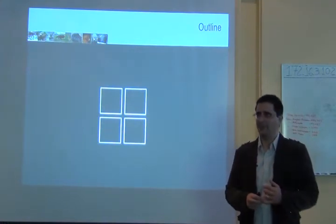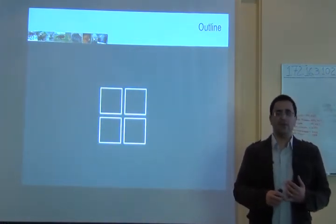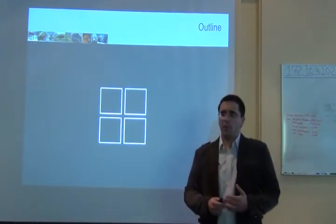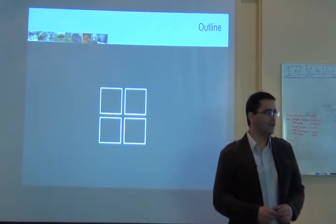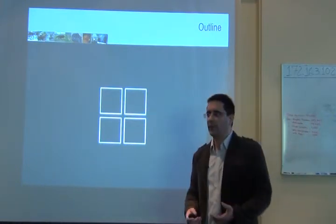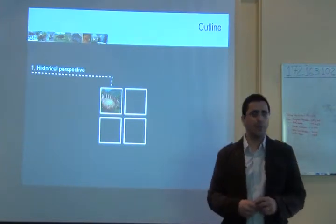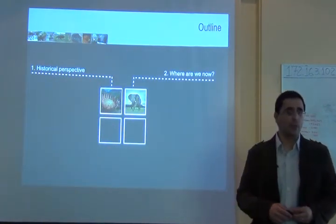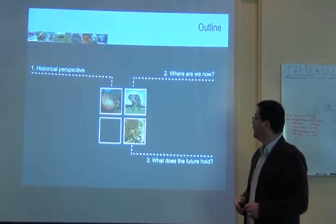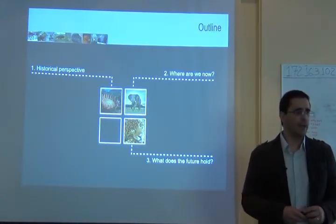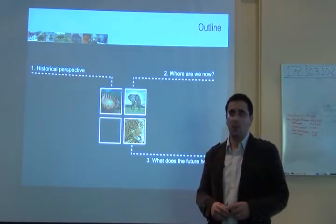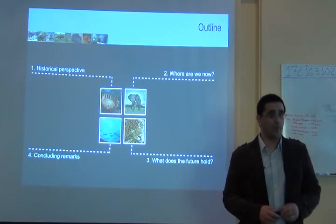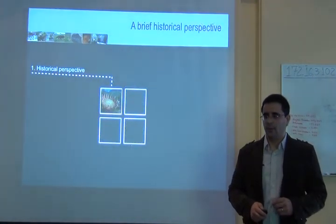The outline of this talk has three parts covering different aspects of conservation planning. The first is more conceptual — what is conservation planning, what are its objectives, and why is it important. We'll start with a brief historical perspective, then cover current methods and available software, then discuss what the future holds for systematic conservation planning, including challenges and methods still to be developed.